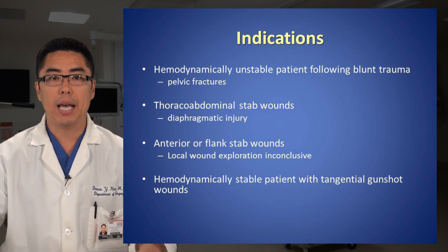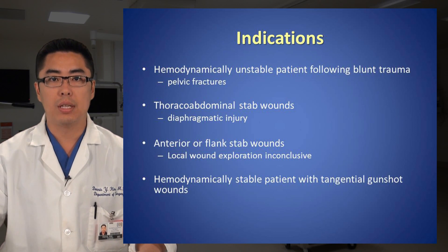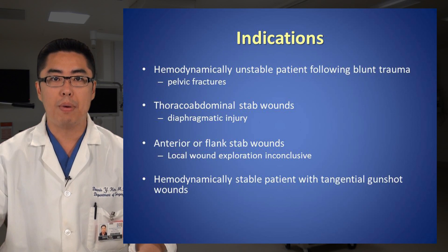Indications: Diagnostic peritoneal lavage may be indicated in hemodynamically unstable patients following blunt trauma, particularly when FAST is unavailable. Patients with hemodynamically unstable pelvic fractures are the perfect example of patients who may benefit from a DPL or a diagnostic peritoneal aspiration, which we will explain in further detail later on.